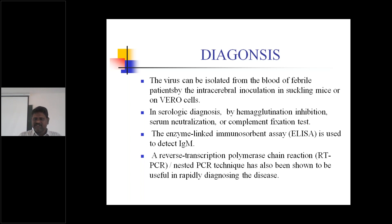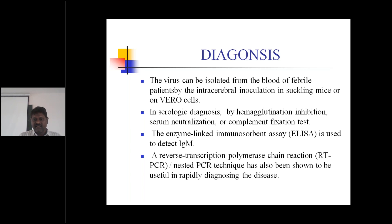The enzyme-linked immunosorbent assay — ELISA — is used to detect IgM antibodies. You can identify specific antibodies for Chikungunya — IgM — with the help of the ELISA test. RT-PCR — reverse transcriptase polymerase chain reaction — and nested PCR technique have also been shown to be useful in rapidly diagnosing the disease, similar to what we are doing for COVID right now.